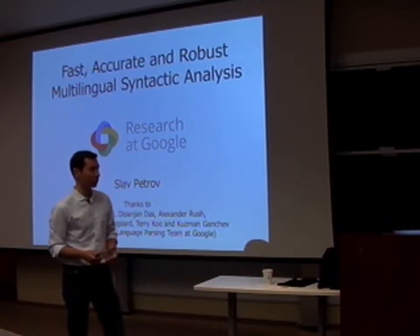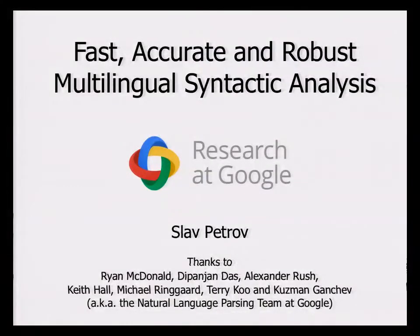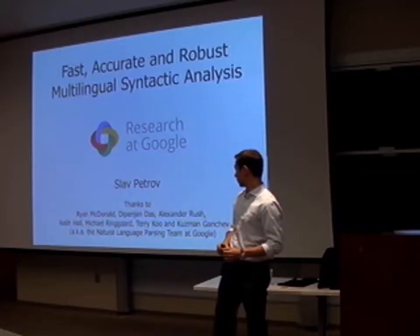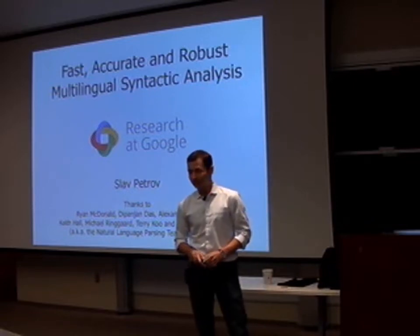I'll try to cover all aspects of it. We'll talk about fast and accurate parsing first, then robustness in terms of domain and task adaptation, and then how we can build parsers for other languages. This is work I've done at Google with Ryan McDonald as one of my primary collaborators, along with various interns and what we call the parsing team at Google.